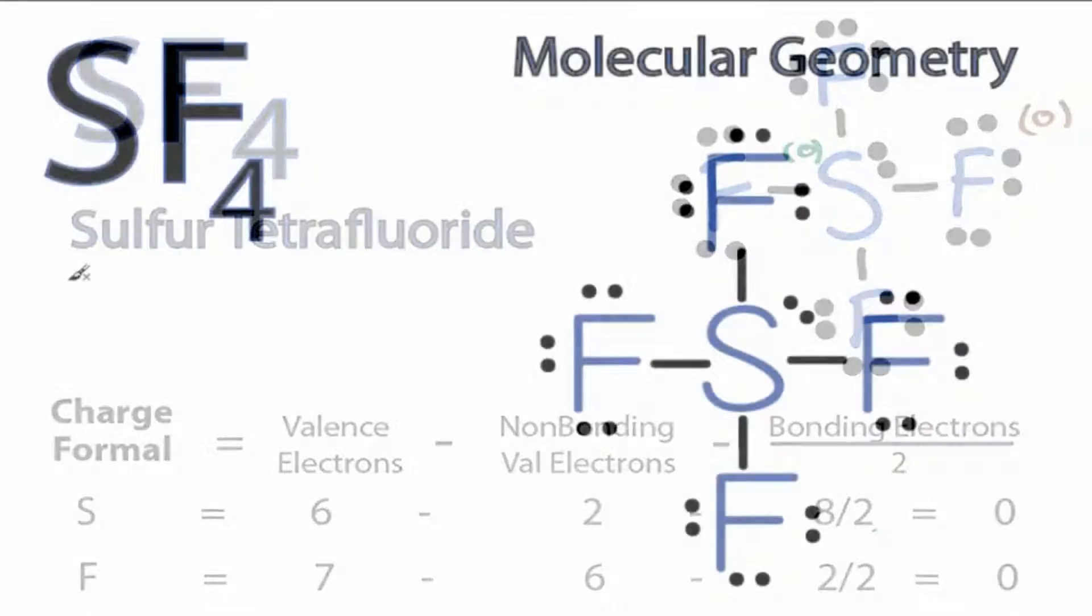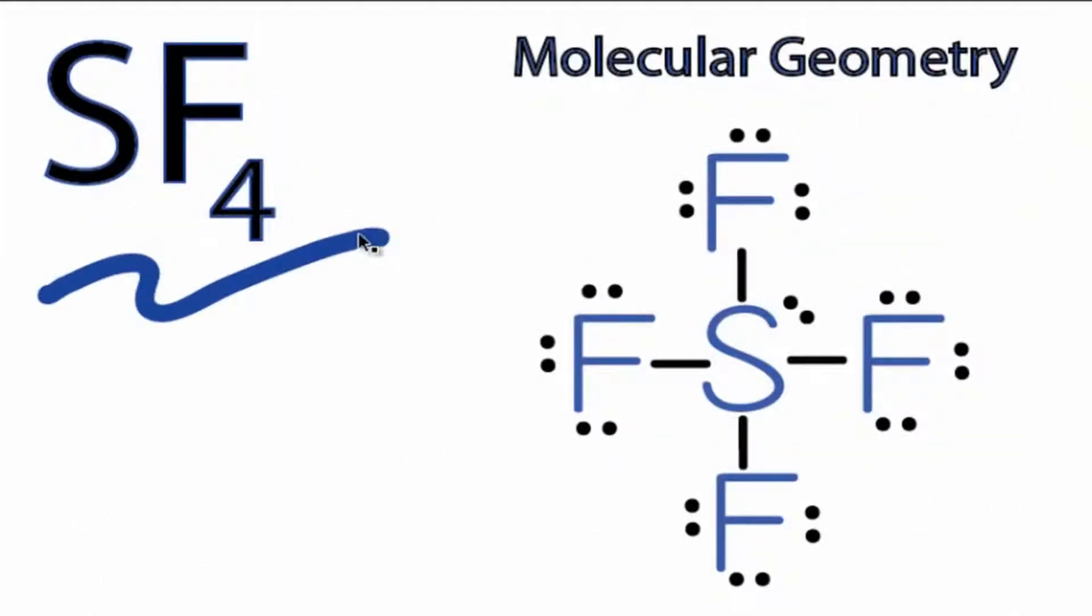Let's take a look at the molecular geometry for SF4. Initially when we look at it, you're probably thinking tetrahedral. It's got 4 things attached to the central sulfur, and that would make sense, except that we have a lone pair of electrons right here, and we have to take those into consideration.